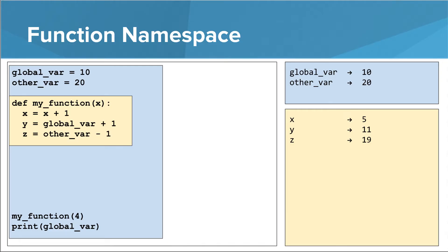Let's look at y and z. y is actually equal to global_var plus one. Now this is interesting because global_var doesn't exist in the function's namespace. If a name does not exist in the local current namespace, it hops up one namespace to look for it. So it hops up to the global namespace, finds global_var there, and grabs that value — so y is 10 plus 1, which is 11. Same thing with z: it's other_var minus one, so 20 minus one, which is 19.